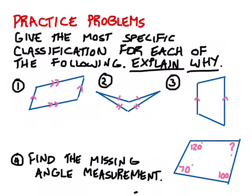Here are your practice problems for the lesson. For each of problems one, two, and three, you need to give the most specific classification for each shape, and explain why you know that to be the case — why is that the best classification? For number four, you're just finding the missing angle measurement where the question mark is. Good luck.